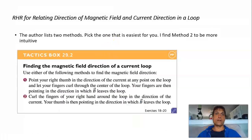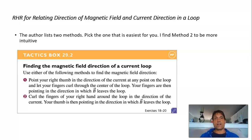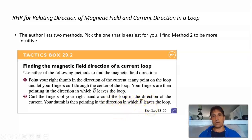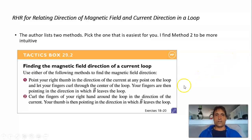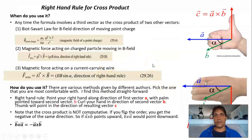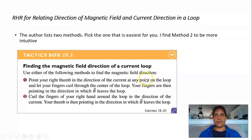There's a third right-hand rule: if you have a current loop and want to know the direction of the magnetic field — as we did with a dipole — you curl your fingers around the loop in the direction of the current, and your thumb gives you the direction of the field leaving the loop. We did that example with current loops and magnetic dipoles. This one is used for loops. So there are like three of them, but the most commonly used is the first one — the cross product rule. Just pick the one you like and use it.